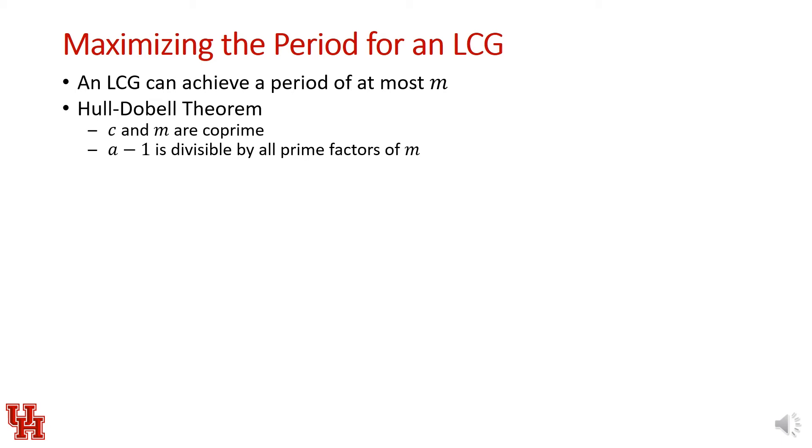If we want to maximize the period of an LCG, because we have an increment, this gives us a little more flexibility. An LCG can achieve a period of at most m, so we have a larger possible period with an LCG. But in order to satisfy this, we have to rely on what's called the Hull-Dobell theorem, which specifies that the increment and m must be co-prime. a - 1 has to be divisible by all prime factors of m, and a - 1 must be a multiple of 4 if m is a multiple of 4.